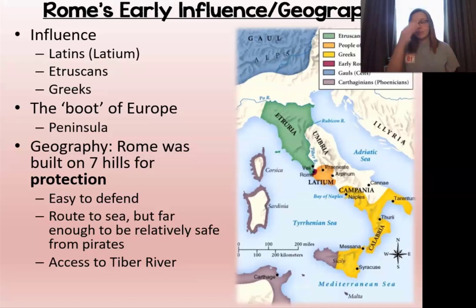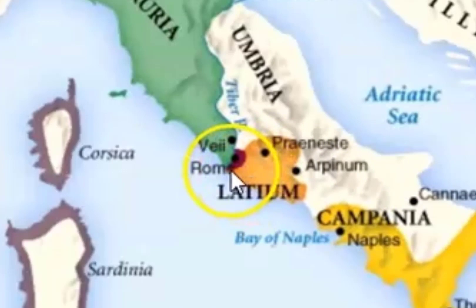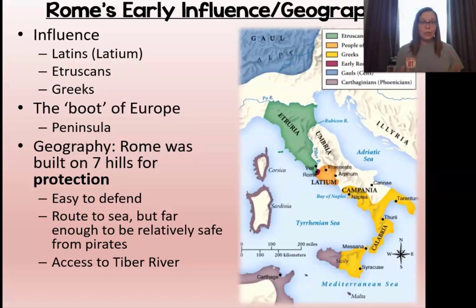Rome was built on seven different hills, and this was done for protection. They provided geographical natural barriers which made it easy to defend from outsiders and invaders. It also had an easy route to the sea, but it was far enough from the sea to be pretty safe from pirates. Rome is located inland, not right on the coast. It also has access to the Tiber River — and as we know, rivers are extremely useful. They provide good soil and are useful for transportation.